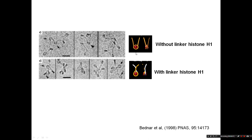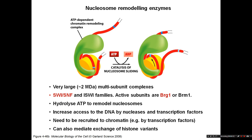In these electron cryo-micrographs we have a nucleosome with the linker DNA. In the presence of the linker histone we can see that the linker DNAs are brought together. Instead of a big extended zigzag, the linker DNAs are brought together because the positively charged linker histone tails bind and neutralize the negative charge of the linker DNA, so it can be brought together and compacted.